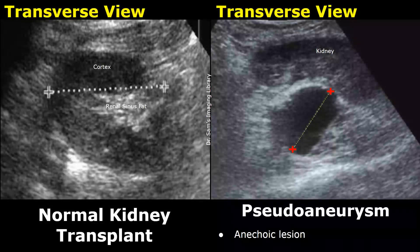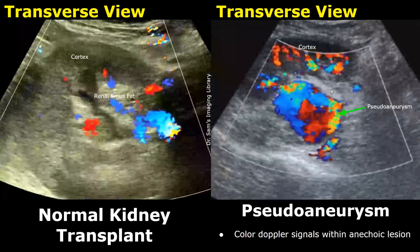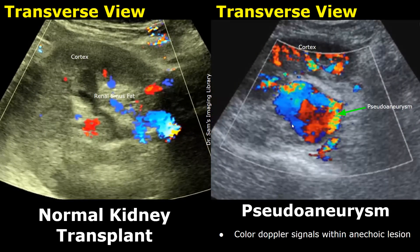Pseudoaneurysm may occur in our transplant kidney after biopsy, and these pseudoaneurysms usually occur at the site of biopsy. It will appear as an anechoic lesion. When we apply color Doppler, this anechoic lesion will show blood flow — we will find color Doppler signals within it, which will confirm that it is a pseudoaneurysm.